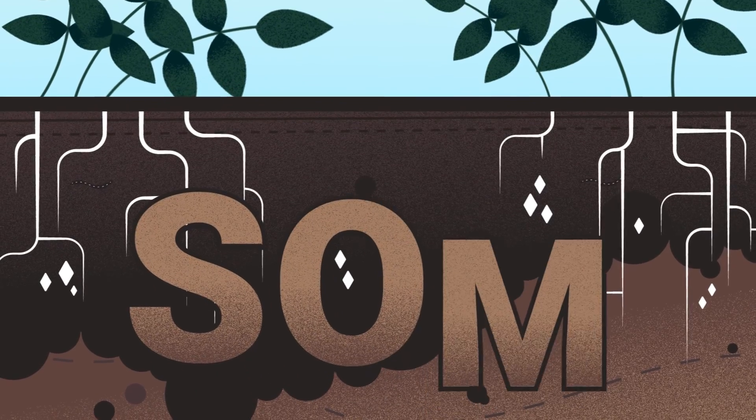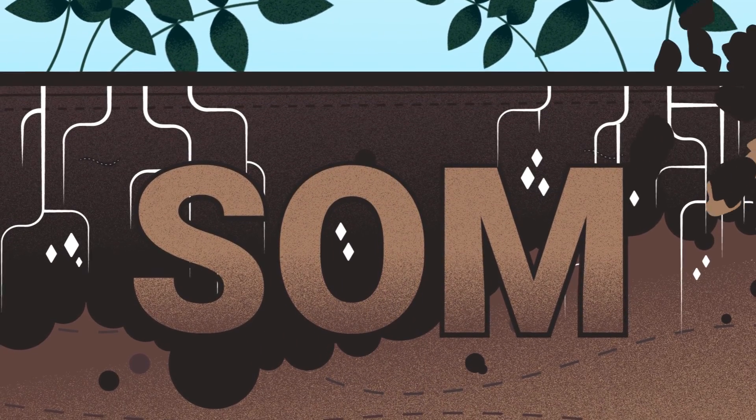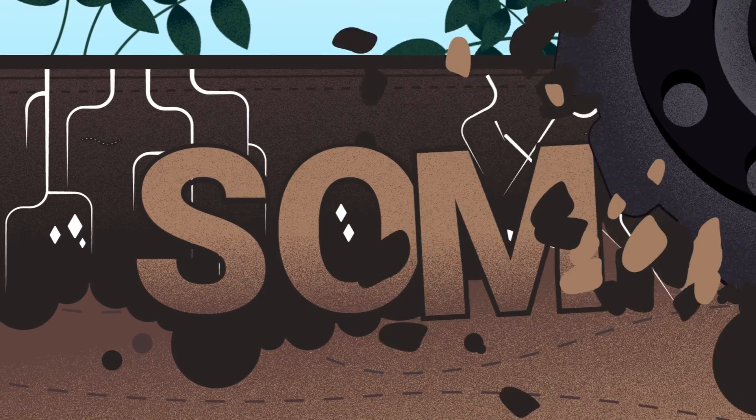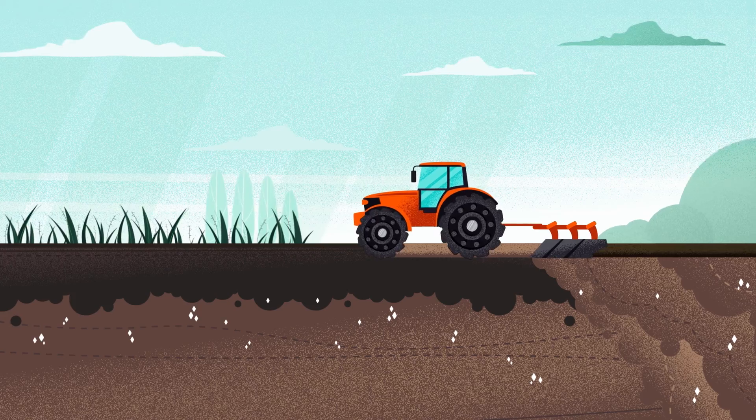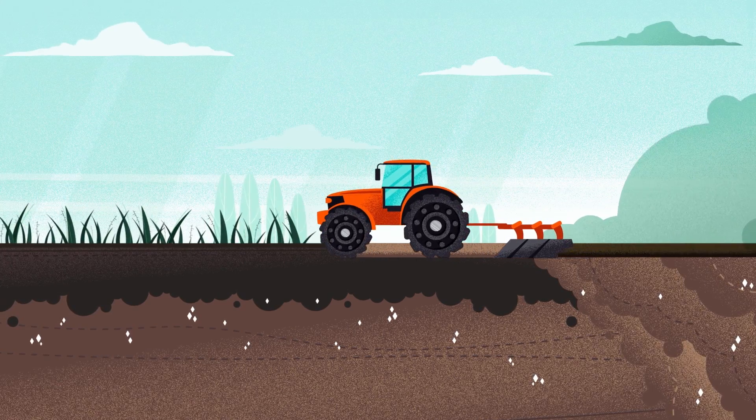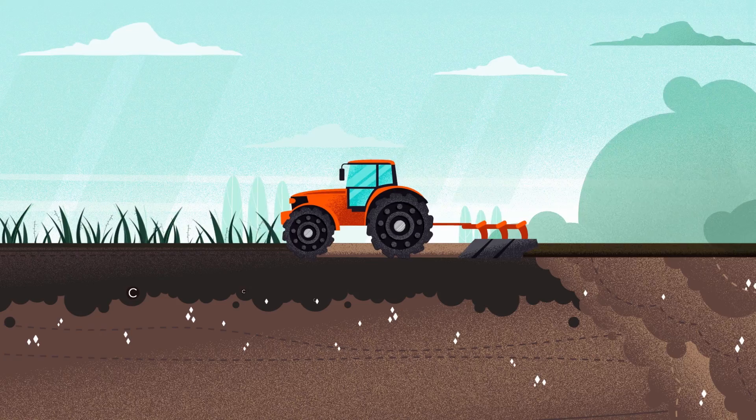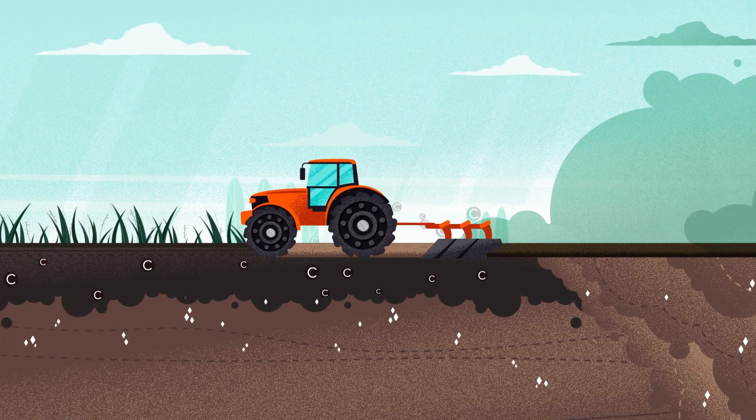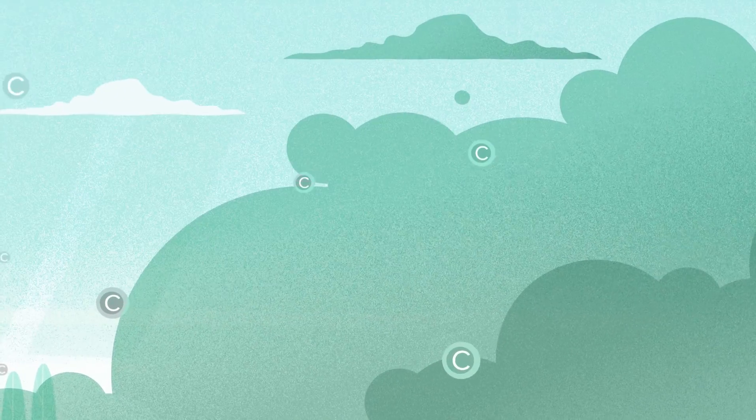Soil organic matter houses natural biology and a diversity of microbes. The farming practice of tillage damages soil and substantially reduces soil organic matter, which causes destruction of soil structure and loss of carbon from soil organic matter into the atmosphere.